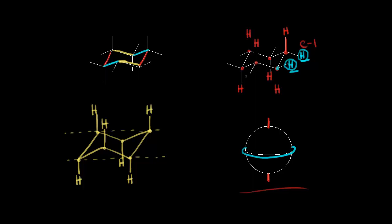At carbon three, this would be down. At carbon four, this would be up. At carbon five, this would be down. At carbon six, this would be up. So just imagine all of these hydrogens are along the equator of the ring.